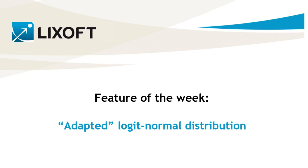Today I will show you how to change in Monolix the limits of the logit normal distribution for observations and individual parameters. Monolix has four built-in most common distributions: normal, lognormal, logit, and probit.